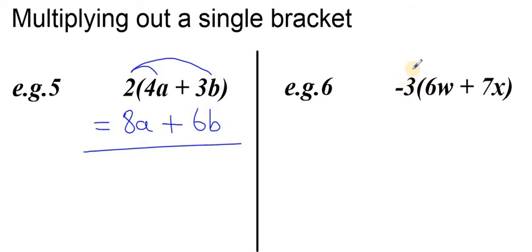On to the next example, again drawing on multiplication loops. We have negative 3 times 6w,